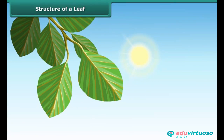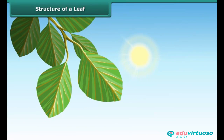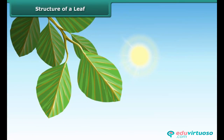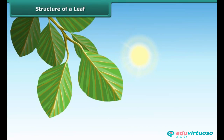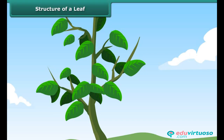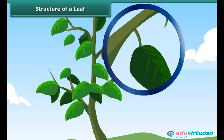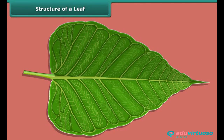A leaf is a flat, green structure attached to a node on the stem. The stalk by which a leaf is attached to the stem is called the petiole. The thin, flat and wide part of the leaf is called the lamina.